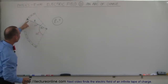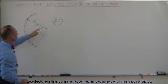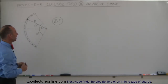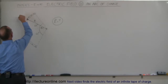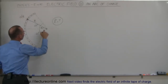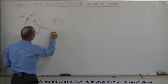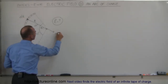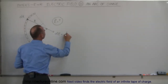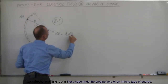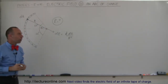The radius is R, so the charge always resides exactly the distance R away from the point of interest. Let's take a small segment and call it DQ. The electric field at this location caused by DQ is a small amount DE, equal to K times DQ divided by R squared, where R is the radius of the circular arc.